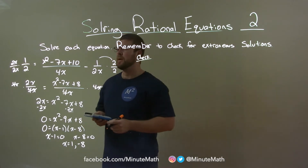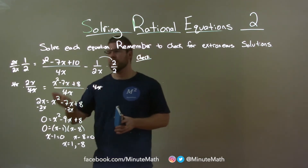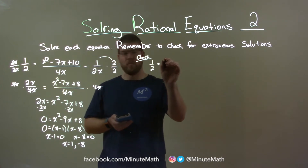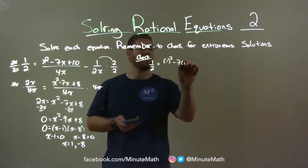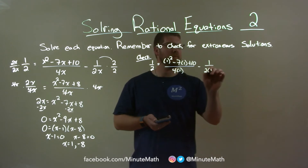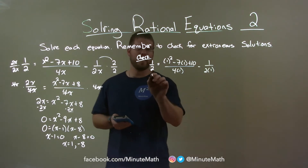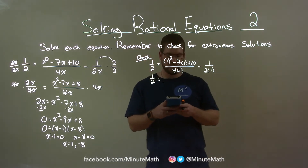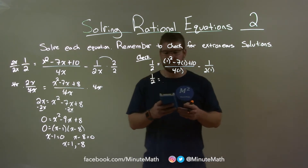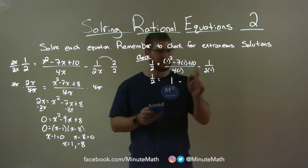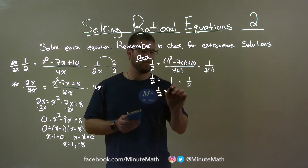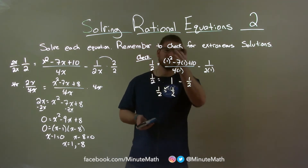Check. To do that, we take our values and plug them in for x to see if the left and right-hand sides are equal. Is 1 half equal to — let's go with x equals 1 first: 1 squared minus 7 times 1 plus 10 over 4 times 1, minus 1 over 2 times 1? Well, 1 squared is 1, minus 7 plus 10 is 4, divided by 4, that's just 1. We have 1 minus 1 half, which is 1 half. Left and right-hand sides are equal, so x equals 1 is a true solution.